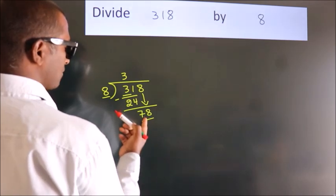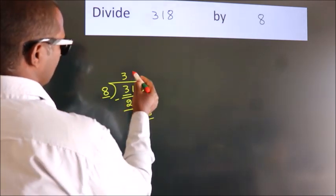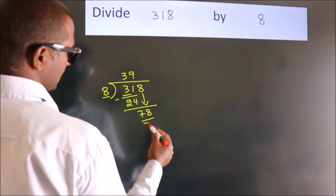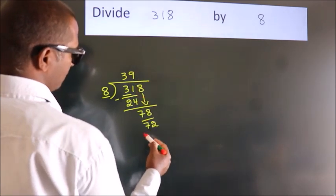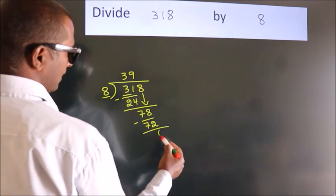A number close to 78 in 8 table is 8 nines, 72. Now, we subtract, we get 6.